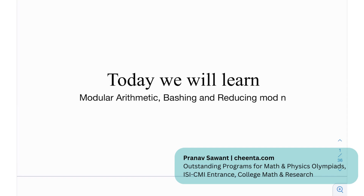Hello everyone. Today we have a really interesting problem in number theory. We're going to be looking at modular arithmetic — bashing and reducing with mod n. This is a classic number theory problem, and in most number theory problems, especially involving equations, you kind of have to reduce it to some simplified cases or simplified forms that are easier to deal with.